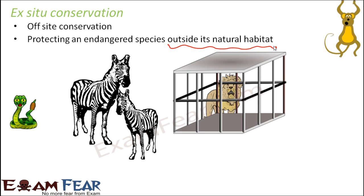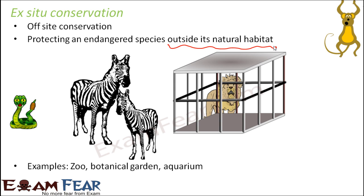Some examples of ex-situ conservation are zoos, botanical gardens, and aquariums. If you have ever been to a zoo, you see a huge variety of animals in an artificially created area, constructed so that a tiger or lion gets free space to roam around. Enough food is provided to all the animals regularly, and even though it is not their natural habitat, they get all the facilities to live and survive there.